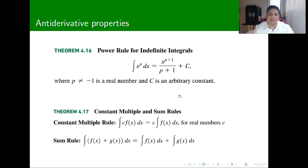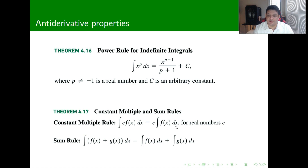Anti-derivatives behave very similarly to derivatives. We can take out a constant, and we can split the sum. So if we're taking the anti-derivative of a constant times a function, we can just pull the constant out and worry about what the anti-derivative is. Similarly with the sum rule: if you're taking the anti-derivative of a sum of two functions, you can just split that into the sum of the two anti-derivatives.